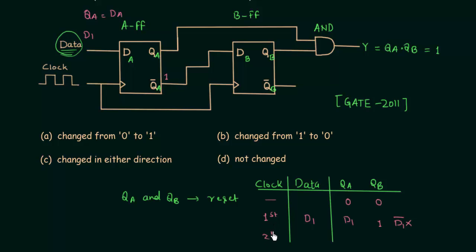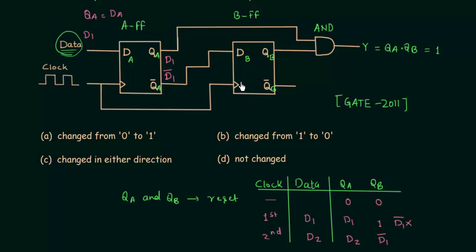For the second clock pulse, let's say data equals D2. So QA equals D2 and QB is now equal to D1 complement. During the second clock pulse QA equals D1, so QA complement equals D1 complement, meaning DB equals D1 complement and this makes QB equal to D1 complement. This is the important result from this circuit, and now we will generalize the case.